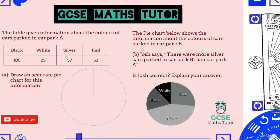This question says the table gives information about the colors of cars parked in Car Park A. We need to draw an accurate pie chart for that. A second pie chart shows Car Park B. Josh says there were more silver cars in Car Park B than Car Park A — is Josh correct? We'll draw the first pie chart and then consider whether we can compare the two silver sections.